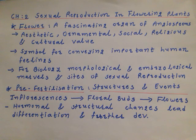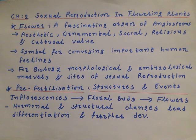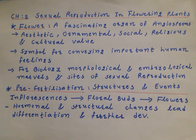Hello friends, from this lecture we are starting Chapter 2: Sexual Reproduction in Flowering Plants. In Chapter 1 you have already studied about reproduction — asexual and sexual reproduction. Here we are going to study in detail about sexual reproduction in flowering plants. As you know, flower is a fascinating organ of angiosperm, having aesthetic, ornamental, social, religious and cultural value. But for a biologist, it is a morphological and embryological site of sexual reproduction.